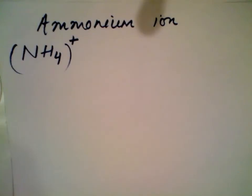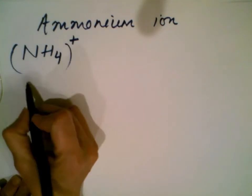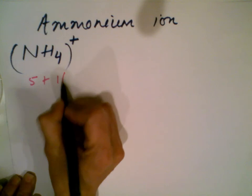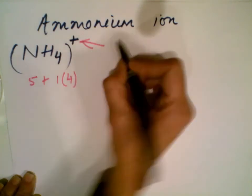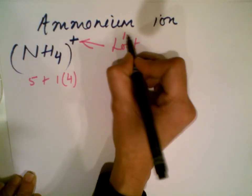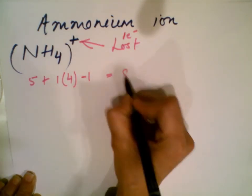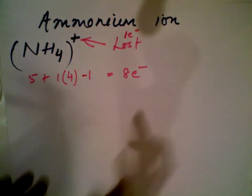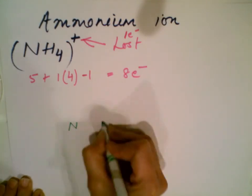Let's start with the common example of the ammonium ion. Nitrogen has five valence electrons, hydrogen has one valence electron and there are four hydrogens, and the positive one charge shows that one electron is lost, so you subtract one. The total number of electrons here is eight. We have to distribute these eight electrons among the four atoms.